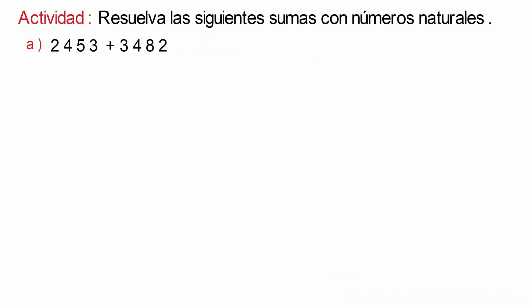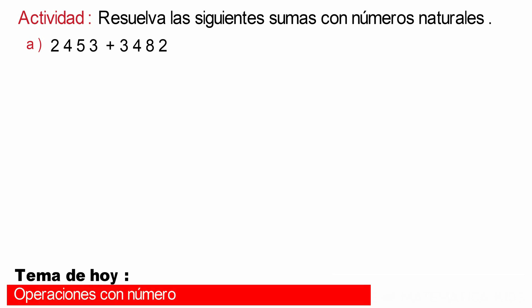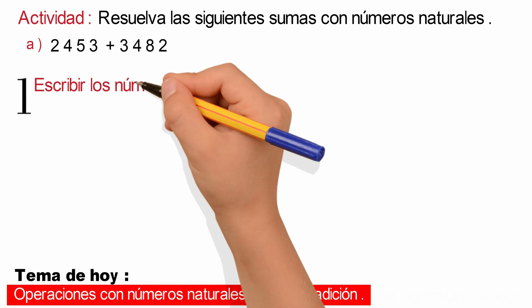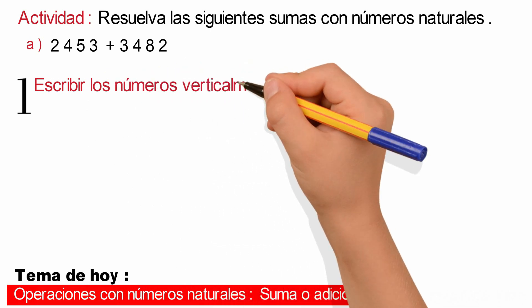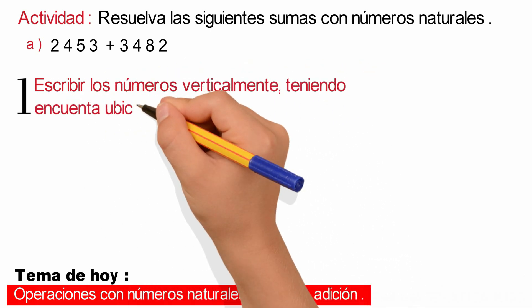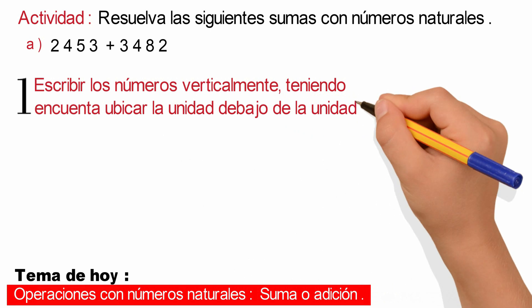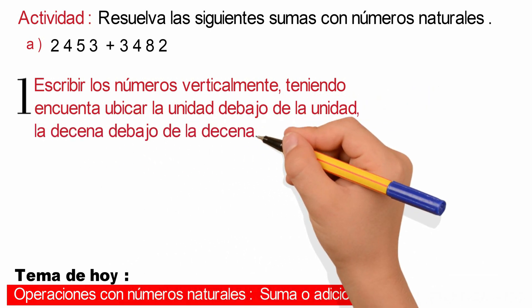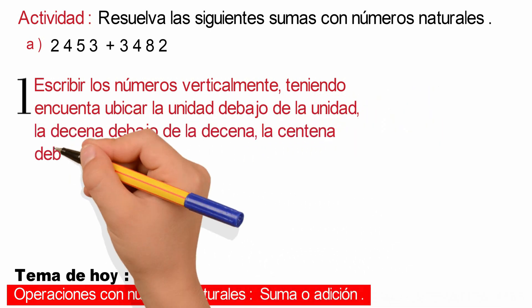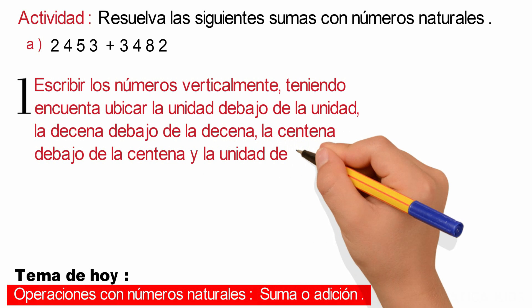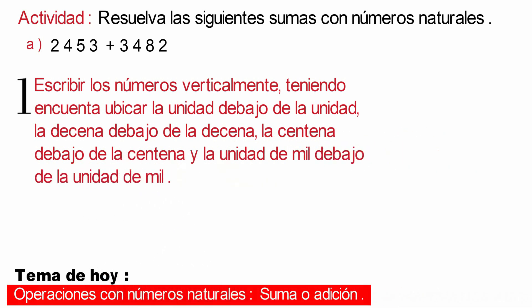Recordaremos que para sumar números naturales con 4 cifras y 2 sumandos, debemos seguir el siguiente procedimiento. Paso número 1: escribir los números verticalmente teniendo en cuenta ubicar la unidad debajo de la unidad, la decena debajo de la decena, la centena debajo de la centena y la unidad de mil debajo de la unidad de mil.